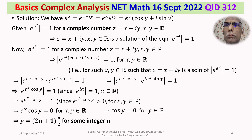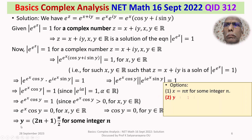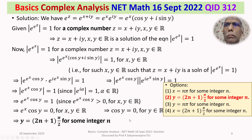Looking at our options, the answer y = (2n+1)·π/2 for some integer n appears as Option 2. Therefore the answer for this question is Option 2. This problem uses very basic concepts of complex analysis and is a straightforward problem.